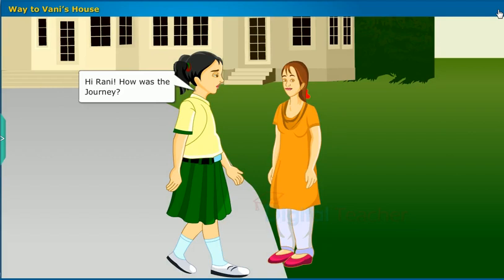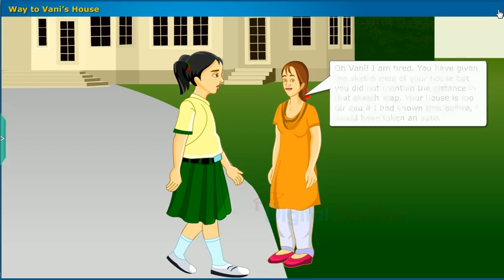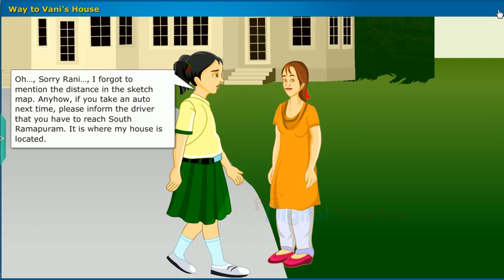Hi Rani, how was the journey? Oh Vani, I am tired. You gave me the sketch map of your house, but you did not mention the distance. Your house is too far, and if I had known that before, I would have taken an auto. Oh sorry Rani, I forgot to mention the distance in the sketch map.